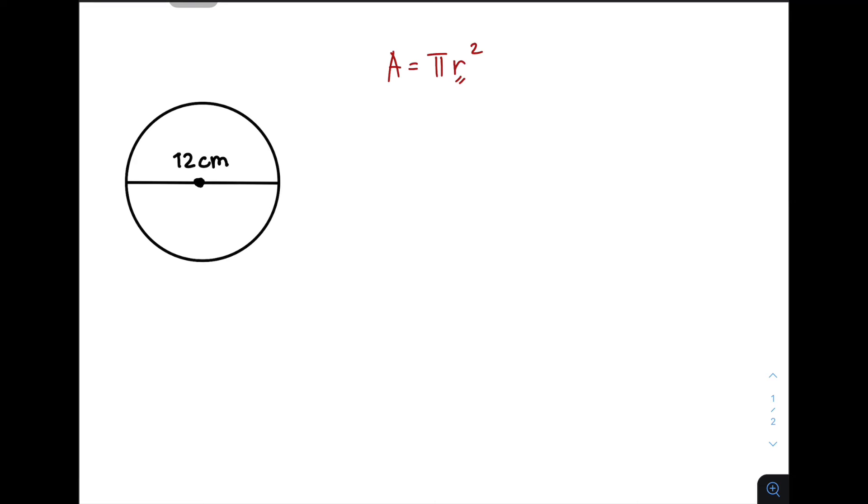Always remember that the value of your diameter is twice the value of your radius. Meaning, if you need the value of r, all you need to do is use this formula: your diameter divided by 2 equals your radius.